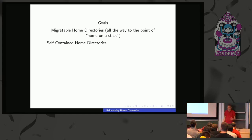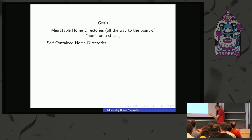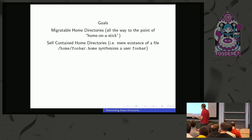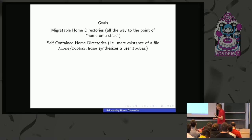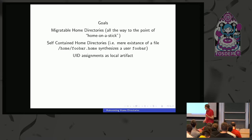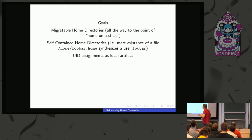The home directories shall be self-contained — data shall not be distributed across the entire system. There shouldn't be an /etc/passwd entry, /etc/shadow entry, and all the sidecar databases. It should be monopolized in one place. The mere existence of the file /home/foobar.home synthesizes the user record — you drop it in there and that's sufficient for getpwent to enumerate the user. In a way, it's the most Unix thing you can do: everything's a file, and the user becomes a file.